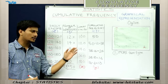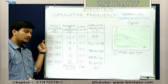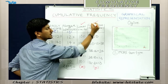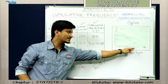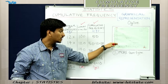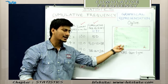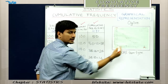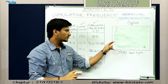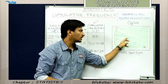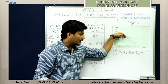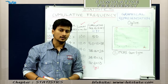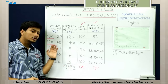Let's quickly summarize the more than type ogive. First, identify the lower limits from your data. Then form a cumulative frequency table. Plot the lower limits on the x-axis and cumulative frequencies on the y-axis, setting the scales accordingly. Plot all points and draw a freehand smooth curve. Find the n/2 value, plot it on the y-axis, touch the curve, then drop to the x-axis — that point is the median of your grouped data.